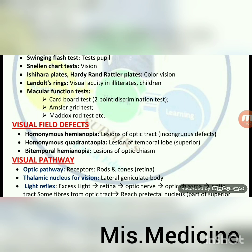Macular function tests: cardboard test, two-point discrimination test, Amsler grid test. Maddox rod test. Visual field defects: homonymous hemianopia, homonymous quadrantanopia and bitemporal hemianopia. Lesions of optic tract: homonymous hemianopia; homonymous quadrantanopia; homonymous quadrantanopia for temporal lobe.